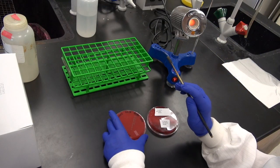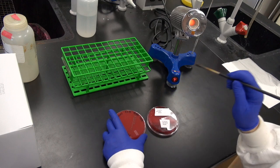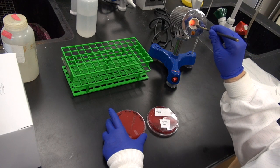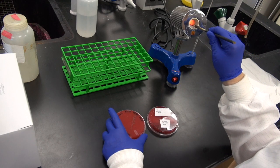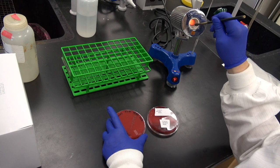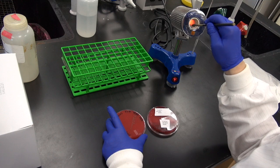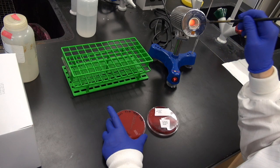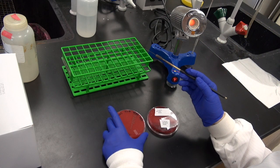To begin, we first place the wire loop inside the incinerator to sterilize it, holding the loop in our dominant hand. We don't want any bacteria from the environment to contaminate our new plate. The loop should be heated until it glows orange.